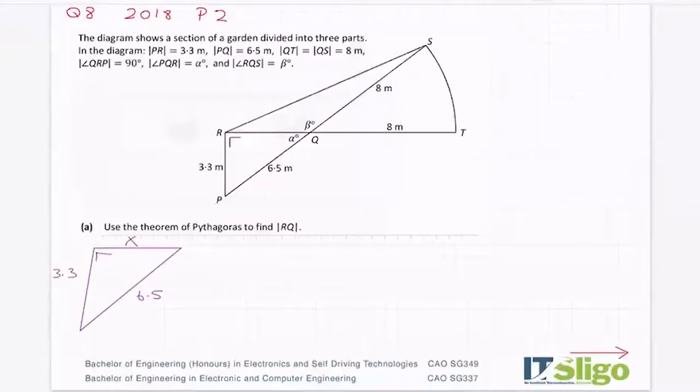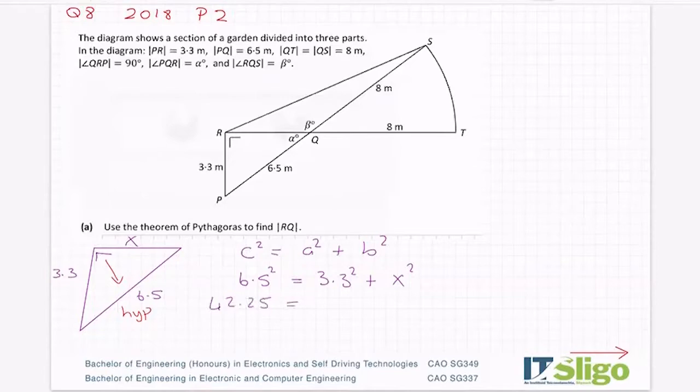And remember always that C is your hypotenuse. Your hypotenuse is always the side opposite your right angle. So you have to go 6.5 squared is equal to the other two sides squared. Now I can call it B squared or X squared. Let me call it X squared, seeing as I've called it X in the diagram. So 6.5 squared, 6.5 squared is 42.25, and that's equal to 3.3 squared, which is 10.89 plus X squared.